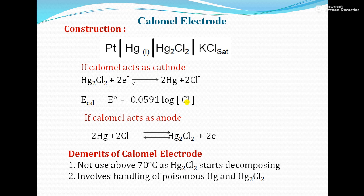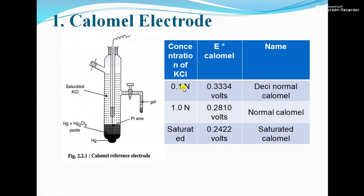The construction of the calomel electrode consists of platinum, then mercury, then mercurous chloride, and then KCl — generally saturated KCl solution is used. As you can see from the table, as the concentration of the KCl solution increases, the E⁰ value of the calomel electrode decreases.